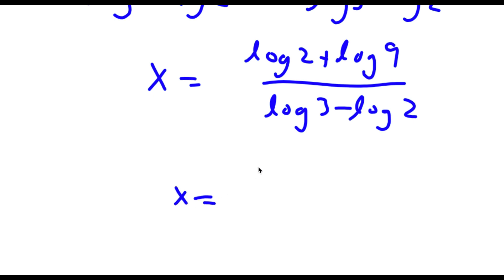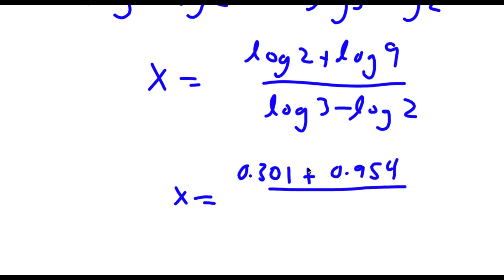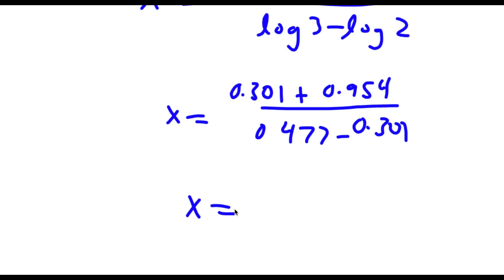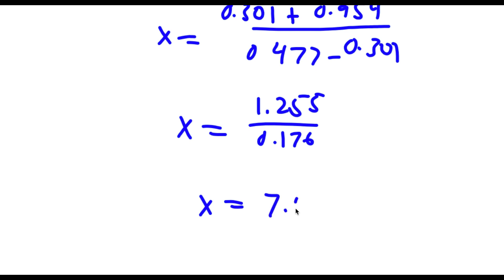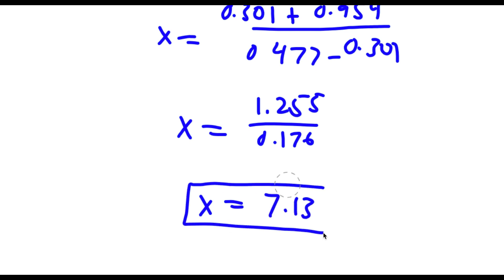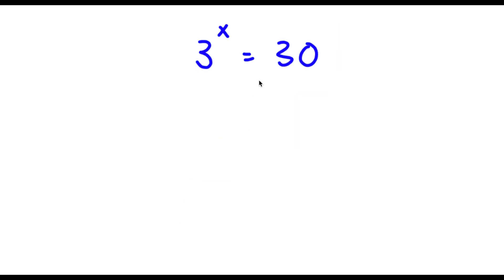Log 2 is equal to 0.301, and log 9 is equal to 0.954. This is over log 3, which is 0.477, minus log 2, which is 0.301. So now this is equal to 1.255 over 0.176, which is equal to approximately 7.13. So this is my answer.